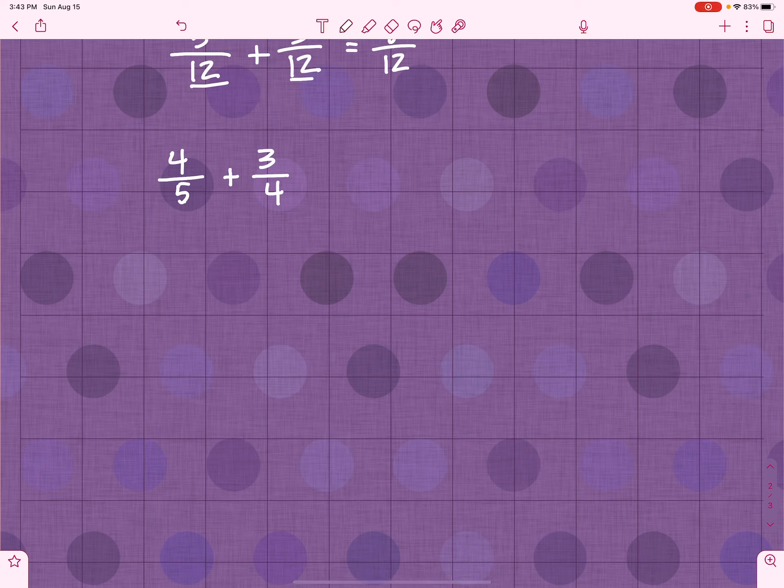I could draw something that has 5 equal pieces, and I know I've got 4 of them. And I could draw you a separate picture with 4 equal pieces, 3 of which I have. But, since 5 and 4 are not the same, those pieces, that 4 and that 3 in the numerator are not going to be the same.